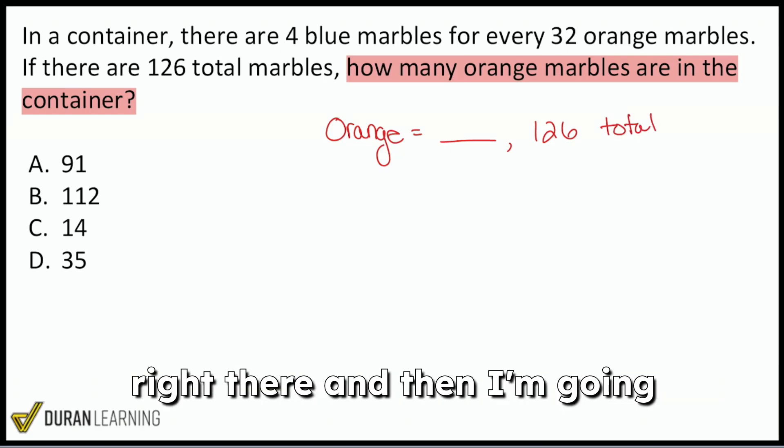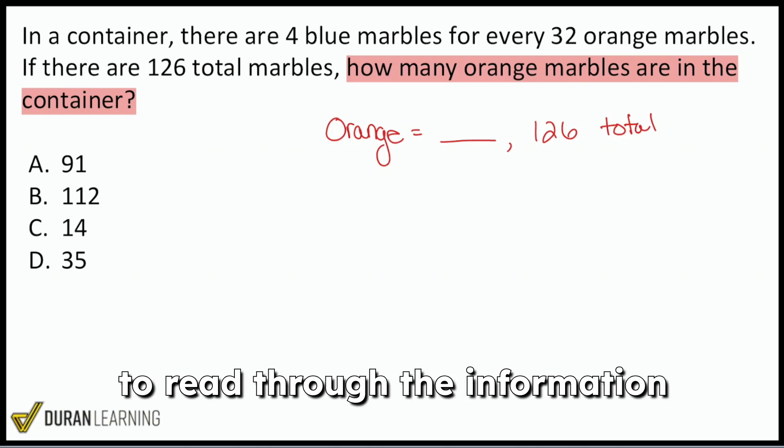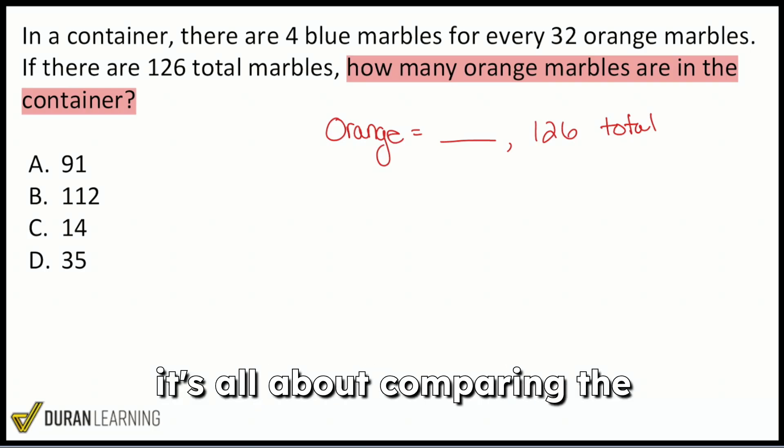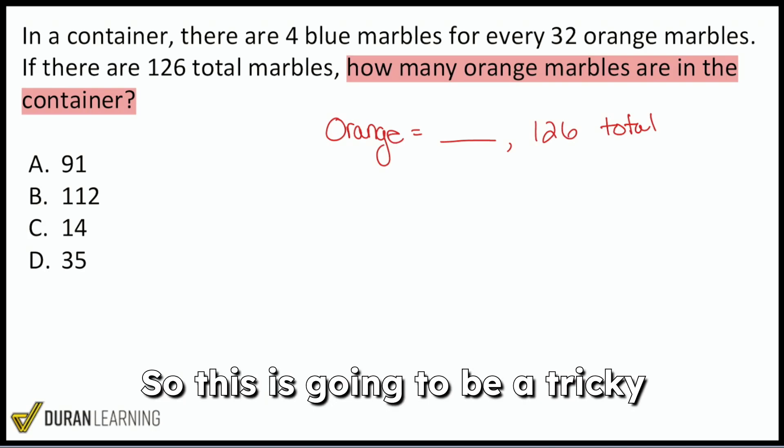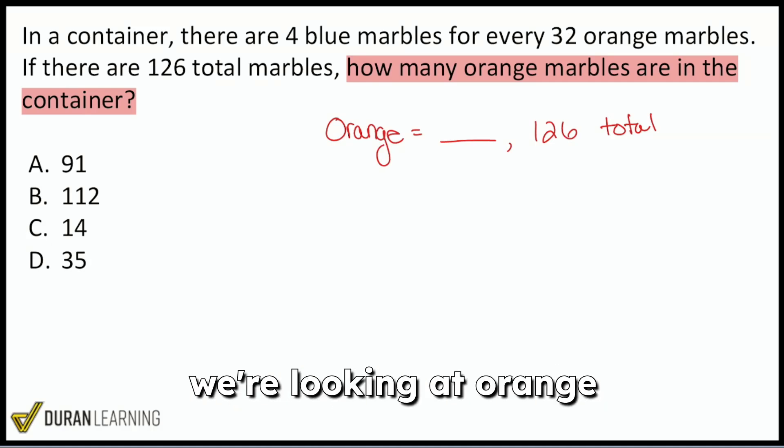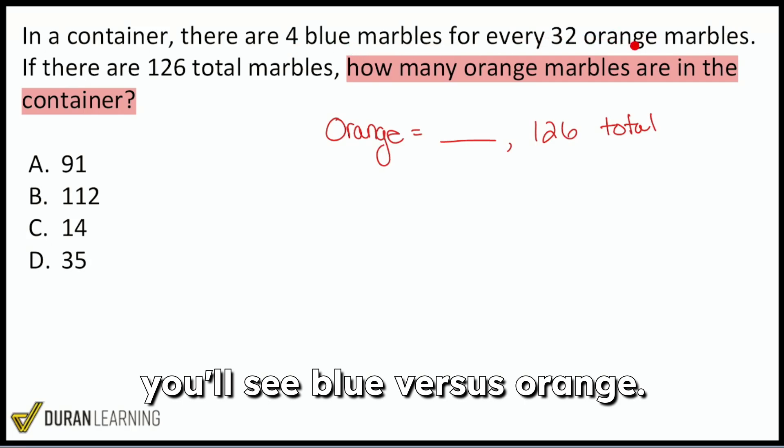So I'm going to write that down right there, and then I'm going to read through the information to make sure that I can line everything up. Because just like in yesterday's video, it's all about comparing the same things in the same way. So this is going to be a tricky one, because when you look at comparing the same things, we're looking at orange versus total. But when you read the actual context, you'll see blue versus orange.